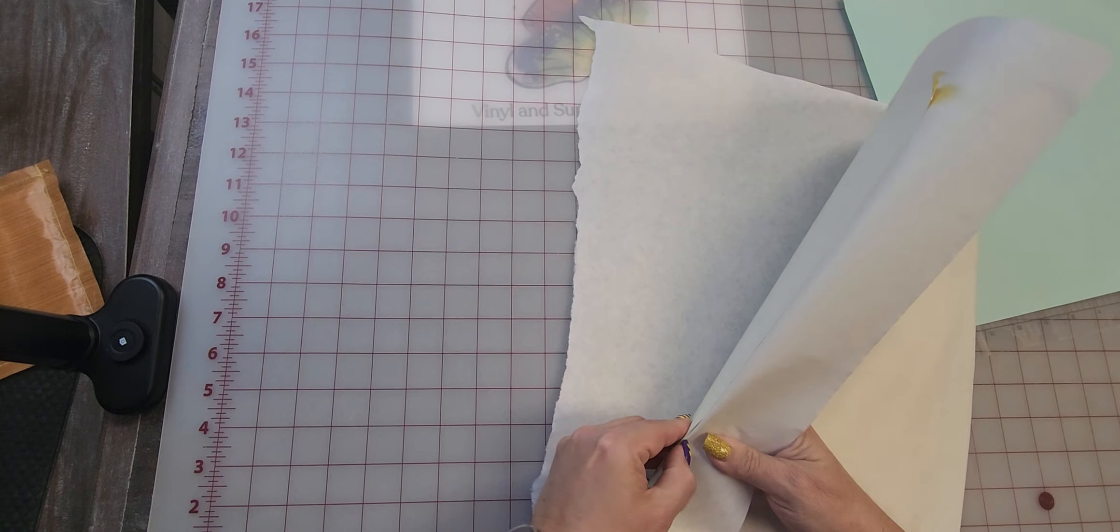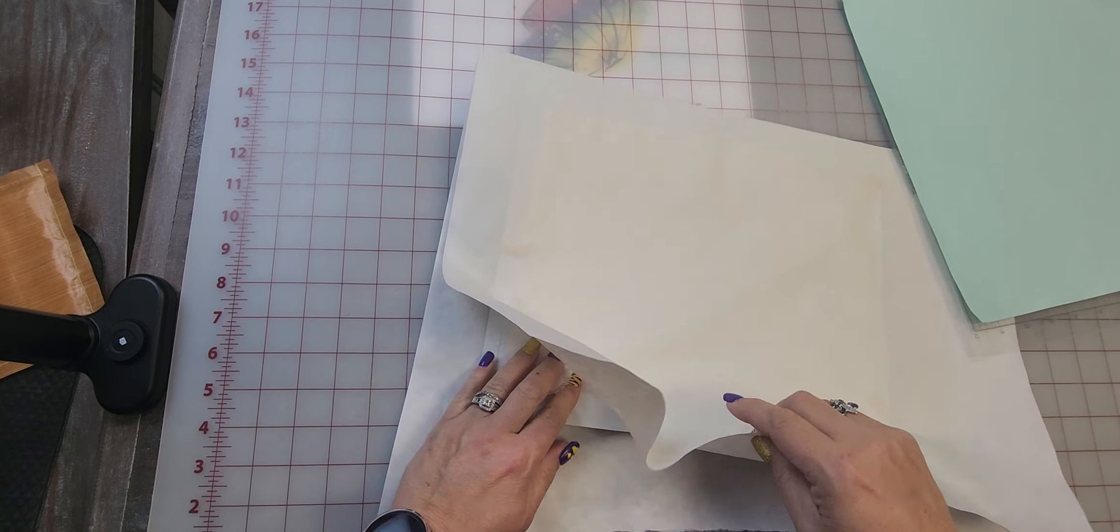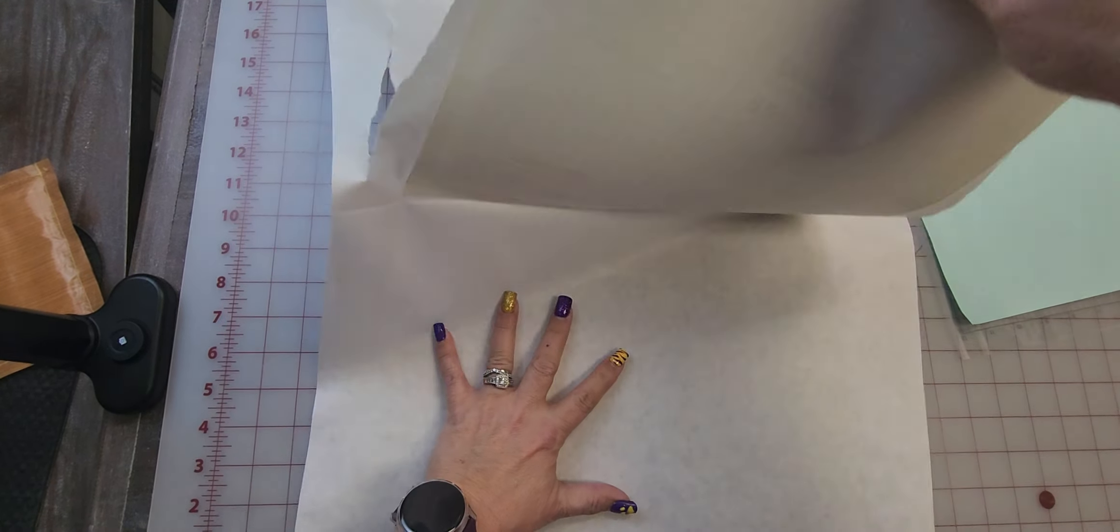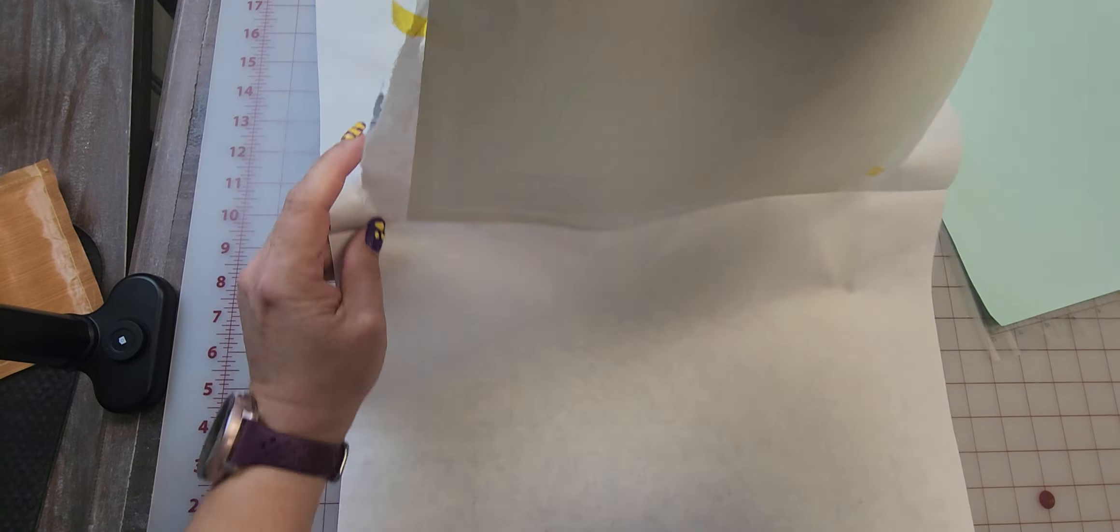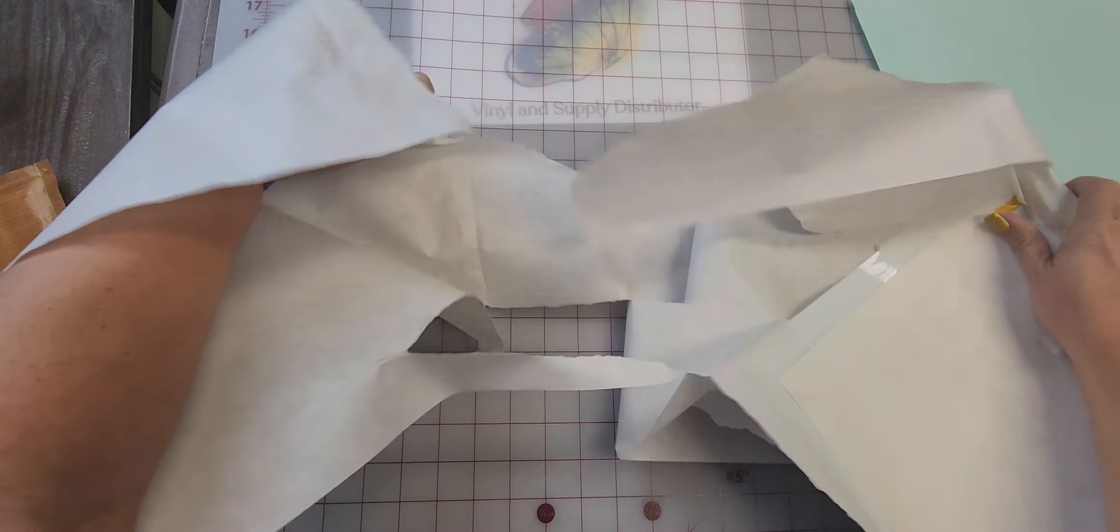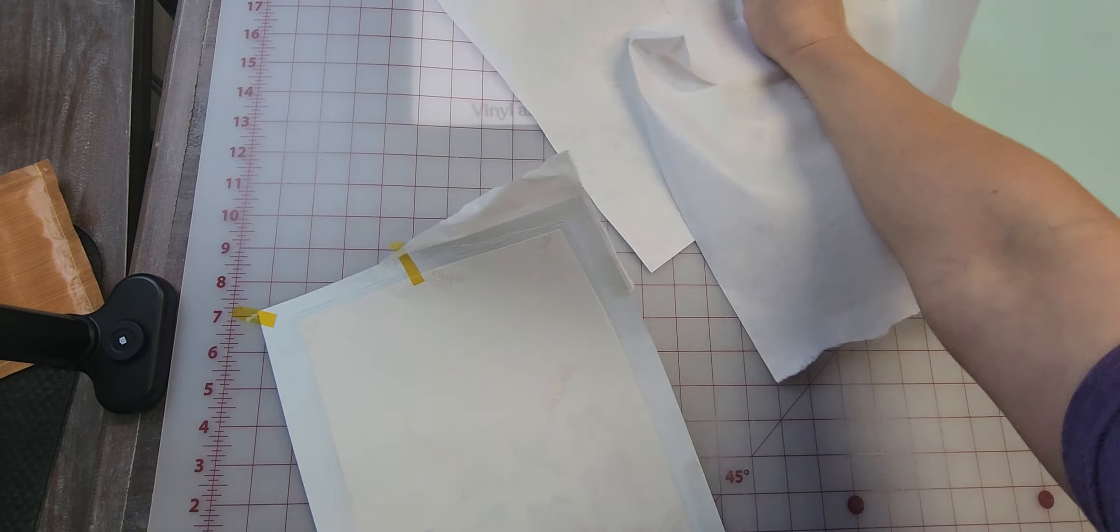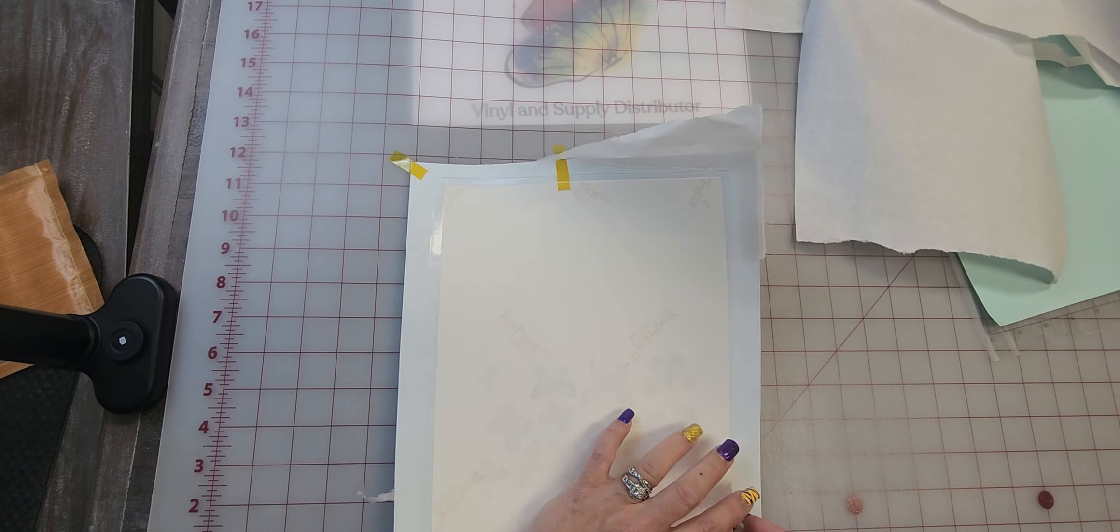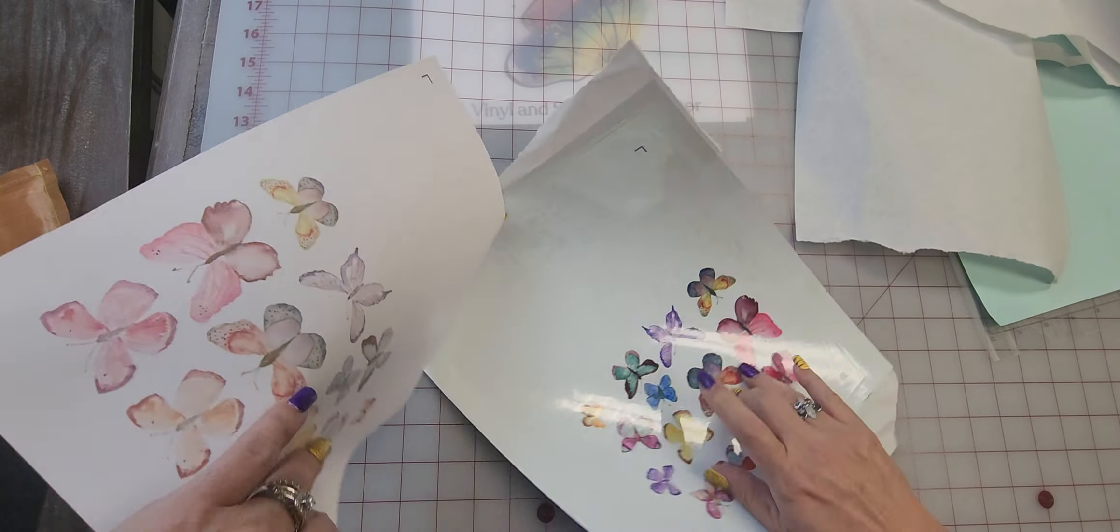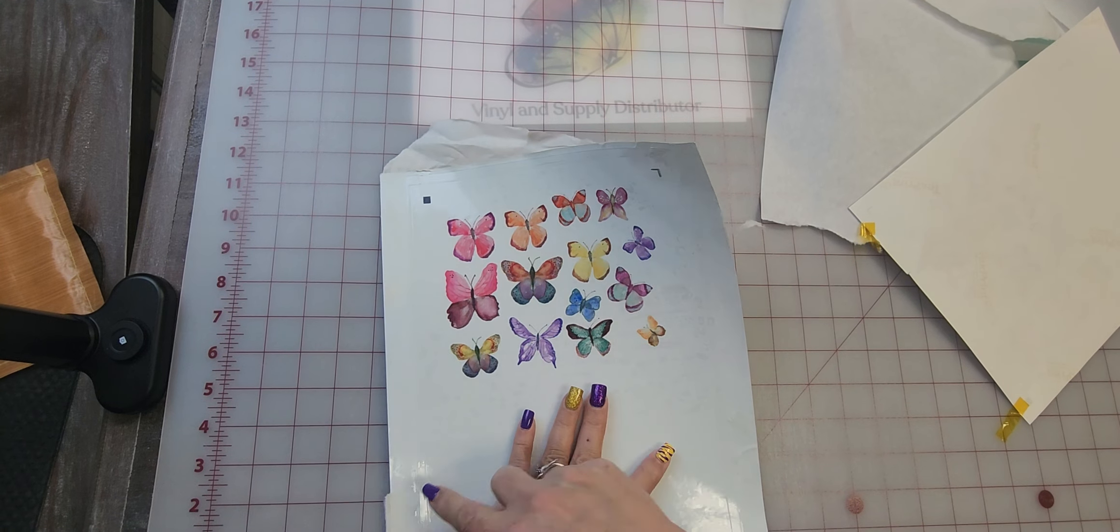The reason why a lot of people like to cut it exactly is because it melts. So I thought I was saving time by not cutting it down, but it's not hard to do. All right, and so now you can come in here, you trim off the edges, and then we will put it in our Silhouette and cut them out.